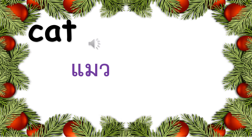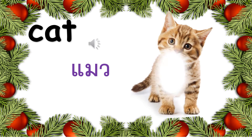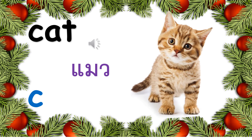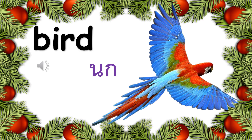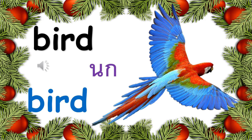Cat. Meow! Let's spell the word cat. C, A, T. Cat. Bird. Knock! Let's spell the word bird. B, I, R, D. Bird.